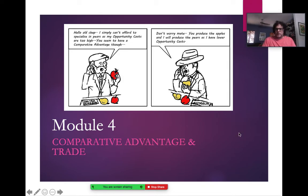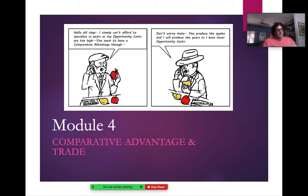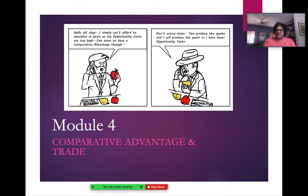This kind of piggybacks off what we're doing with the production possibilities curve. It uses the PPC to get our information, and it deals with specialization, trading, and it shows us how we can get outside our production possibilities curve. This is mostly going to focus on how to solve comparative advantage. We'll do a bunch of practice on Friday, but this is just going to go through some of the basics.